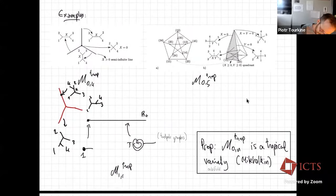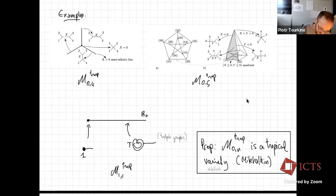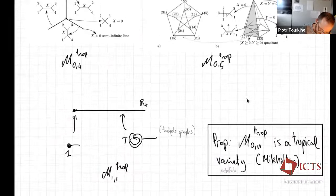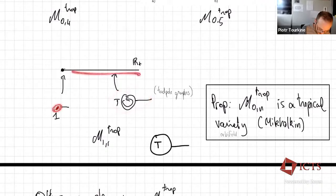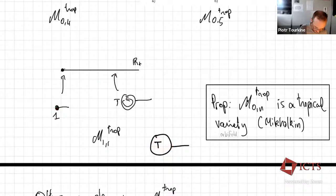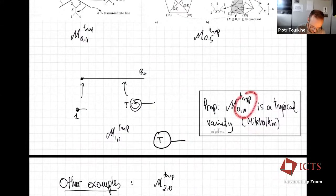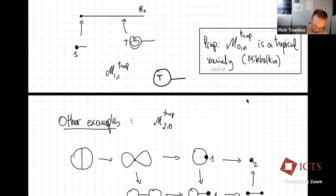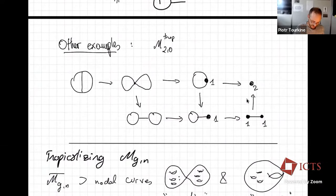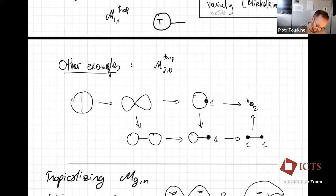This space has dimension 3g - 3 + n almost everywhere. For example, M_{0,4}^{trop} consists of three branches, each corresponding to a different tree topology for four legs — at the center where the internal edge contracts you get a four-valent vertex, reminiscent of contact interactions in QCD. M_{1,1}^{trop} is the moduli space of graphs with one external leg and one internal loop of length t: it is simply R_+, with the origin corresponding to the loop contracting to zero size giving a weight-one vertex.